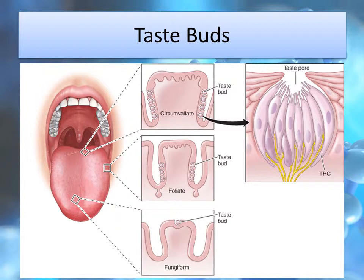Taste buds are a cluster of taste receptor cells which look like an onion, and they are found in the papillae of the tongue. There are three types of papillae: fungiform, foliate, and circumvallate. Circumvallate papillae are found at the very back of the tongue and contain thousands of taste buds. Foliate papillae are present at the posterior lateral edge of the tongue and contain hundreds of taste buds. Fungiform papillae scatter around the dorsum of the anterior two-thirds of the tongue and contain one or just a few taste buds. Taste buds are also located in the palate, epiglottis, and pharynx.